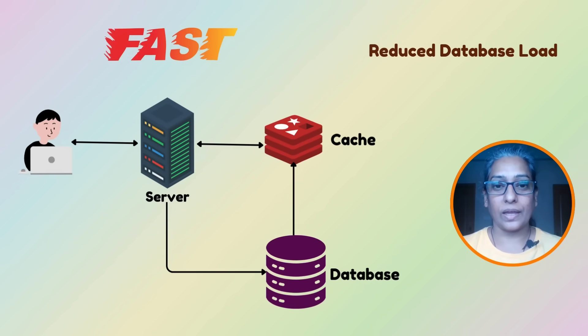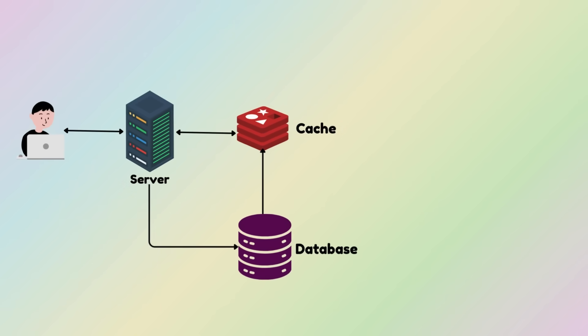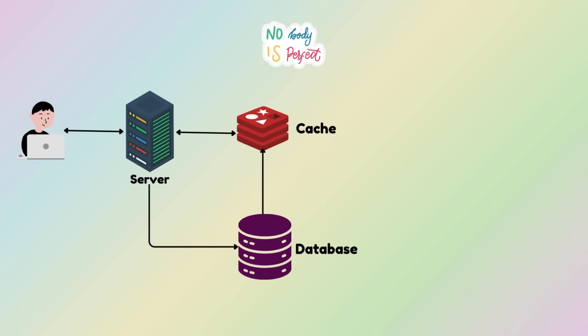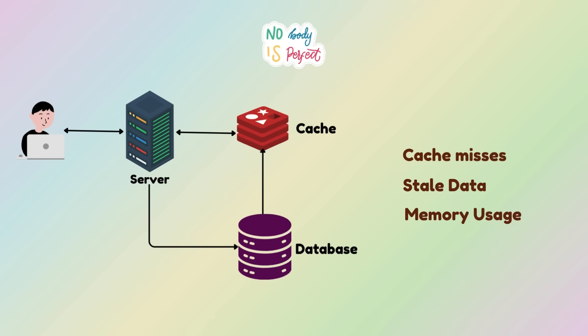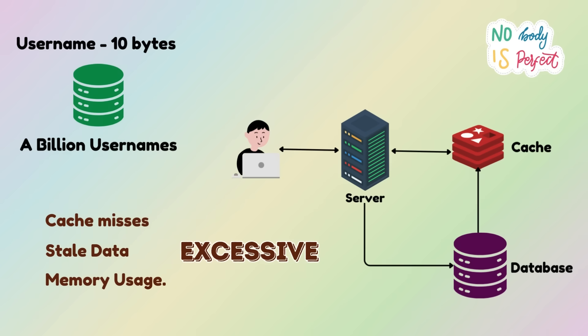In production, a more robust caching solution like Redis might be used. By caching these checks, you are reducing the load on your database and speeding up response times. Caching also helps systems scale by efficiently handling repeated requests for the same data. But caching alone is not perfect — what if your cache misses, or serves stale data? Plus, caches consume memory and if not managed properly, they can lead to excessive memory usage. For instance, if each username requires around 10 bytes of memory, storing a billion usernames would need 10 gigabytes of memory.